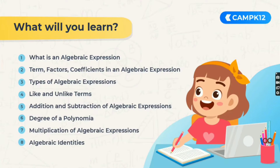Before actually getting into the crux of algebra, let's first see what we are going to learn today. Let's have a quick look at the index. We'll be starting by learning what is an algebraic expression, then moving to terms, factors, and coefficients in an algebraic expression, then the types of algebraic expressions, like and unlike terms, addition and subtraction of algebraic expressions, degree of a polynomial, multiplication of algebraic expressions, and at the end, algebraic identities.